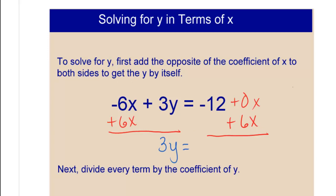When I simplify, I end up with 3y equals, now I want my term with the x to come first, so I'm going to write 6x first plus the negative 12.